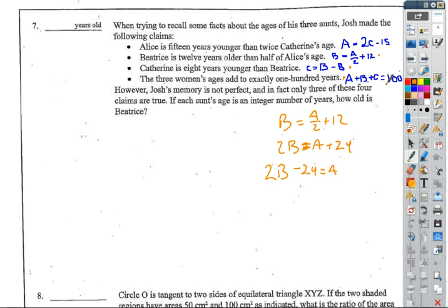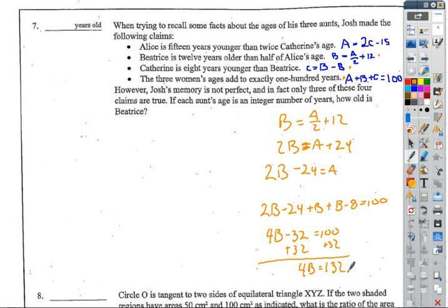So then on my equation here, I can go 2B - 24 + B + B - 8 = 100. So I have 1, 2, check that out, I have 4 B's. And my number is 24 minus 8, so that's going to be negative 32 equals 100. Now this looks promising. So I add 32, add 32, and that will give me 4B = 132. I know that I can divide both sides by 4, and that's going to give me an integer answer. So 4 goes into 13 three times, carry the 1. 4 goes into 12 three times, so that means she is 33. I certainly hope that's the answer.